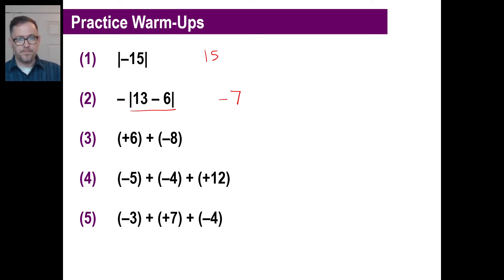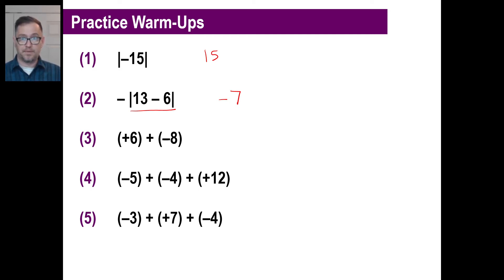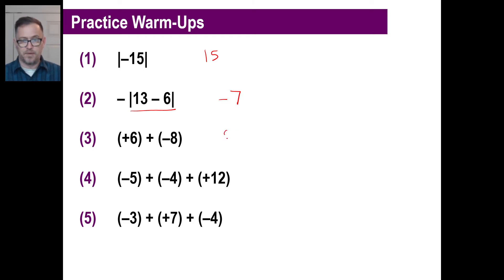Number three: immediately you should know that the method when you add two numbers together that are opposite signs is you take their absolute values and subtract. So when you see positive 6 plus negative 8, your first action should be 8 minus 6. The answer to that is 2. What sign is 2? Well, which one of these numbers is farther away from zero — has the greater absolute value? It's negative 8. So that means this is negative 2.